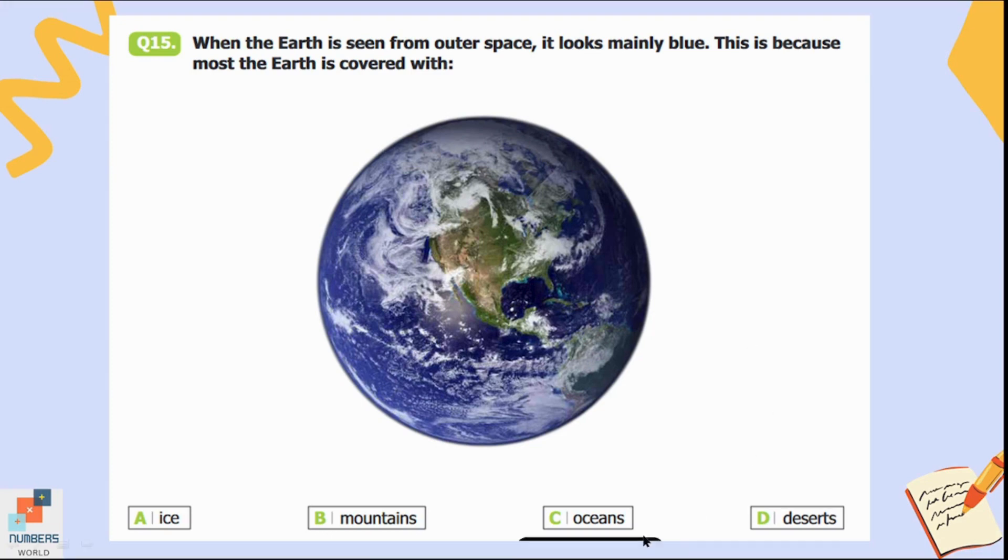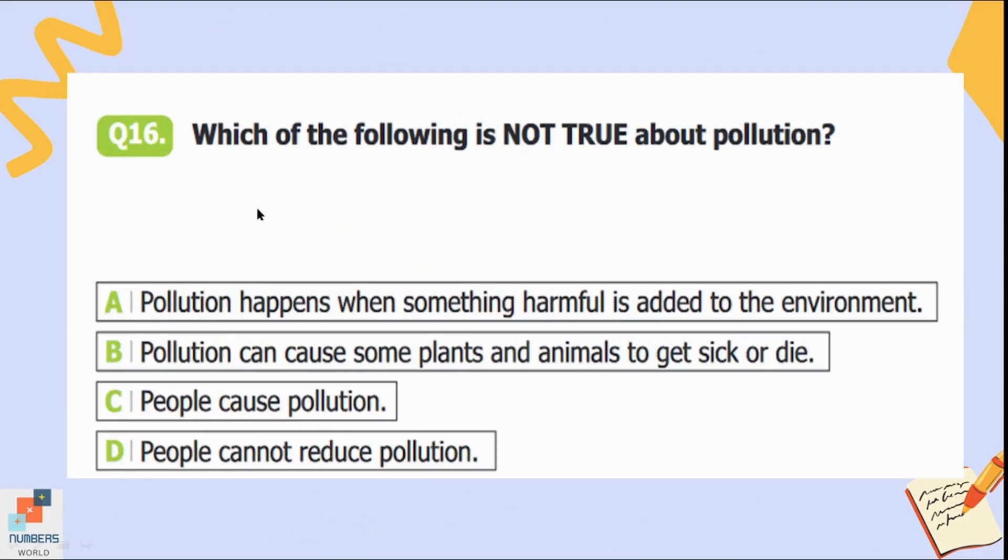Question number sixteen: Which of the following is not true about pollution? Option A: Pollution happens when something harmful is added to the environment. B: Pollution can cause some plants and animals to get sick or die. C: People cause pollution. D: People cannot reduce pollution. Option D is the only incorrect option here. People cannot reduce pollution is false because people can reduce pollution by using the three Rs: recycle, reuse, and reduce.